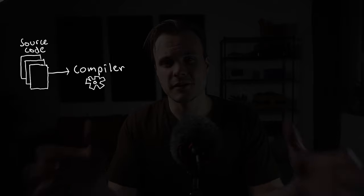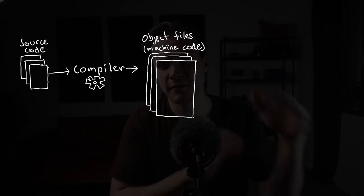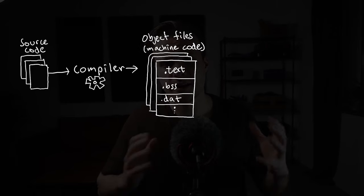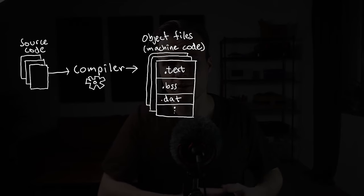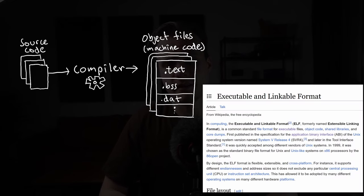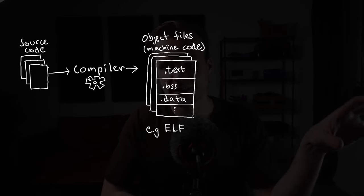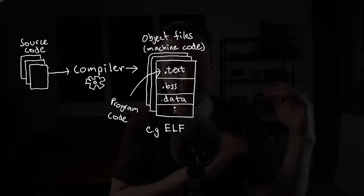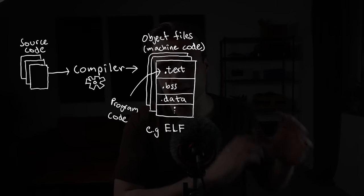Exactly how these sections look depends on the particular compiler and what object format it's using. The common object format used by many compilers is ELF — Executable and Linkable Format — and that's also the one my compiler is using. This format stores the program code into a section called text, and the data into different sections called BSS, read-only data, data, and so on. I'm going to show examples of those sections in my code example.